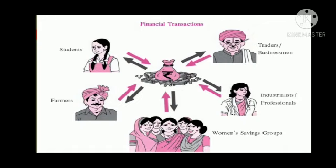In the above picture, who are the people shown to be using the bank services? Those are traders and businessmen, industrialists and professionals, women's savings group, farmers and students. The symbol on the back in the center stands for rupees or represents a bank. The arrows tell us that there is a monetary relation — a give and take relationship of money — between these people and the bank.